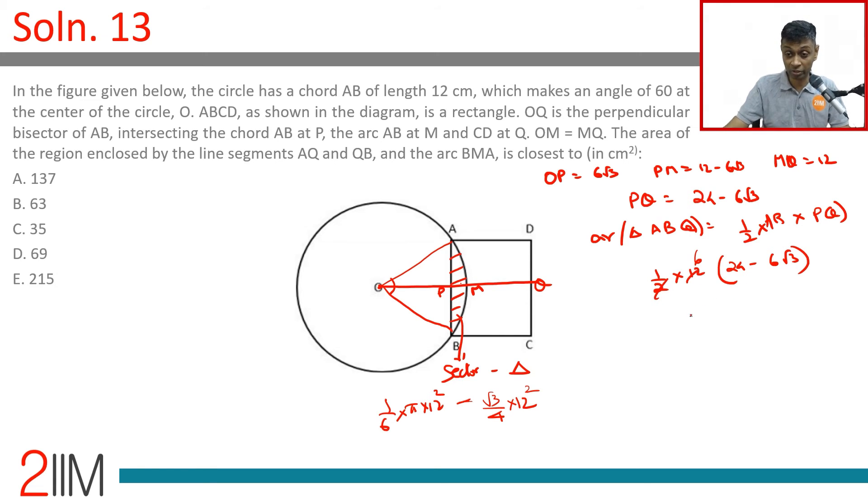6 times 24 minus 6 root 3: 6, 24, 144 minus 36 root 3. Let's find this out: one sixth of pi into 12 square—12 square is 144, 144 by 6 is 24. This is 24 times pi minus root 3 by 4 into 12 square, 144 by 4 is 36, 36 root 3.